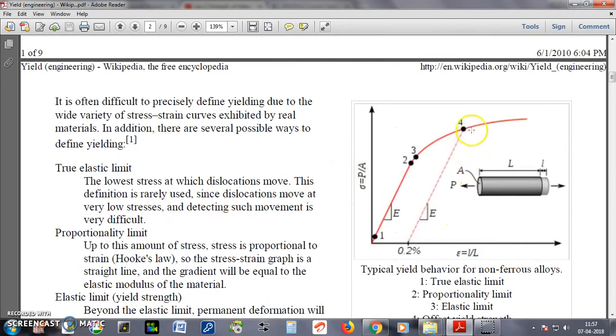For example, we draw a line parallel to this particular strain line where the stress is proportional to strain, and here we can have a value of stress for a particular value, for example, 0.2% of strain over here.